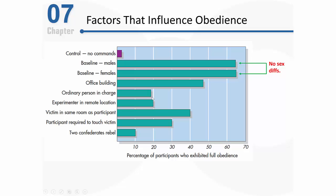Milgram was also interested in the physical location of the authority figure — whether he was right there in your face or somewhere more remote where you'd feel less social pressure. In one variation, the experimenter was in a remote location and would literally phone in the orders rather than barking them at you directly. In that situation, obedience rates again dropped considerably compared to the baseline, to around 20 percent.